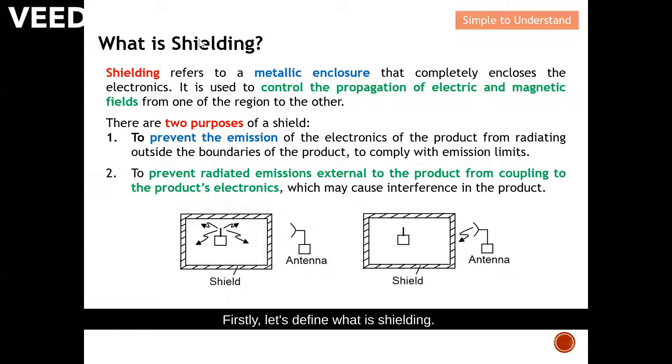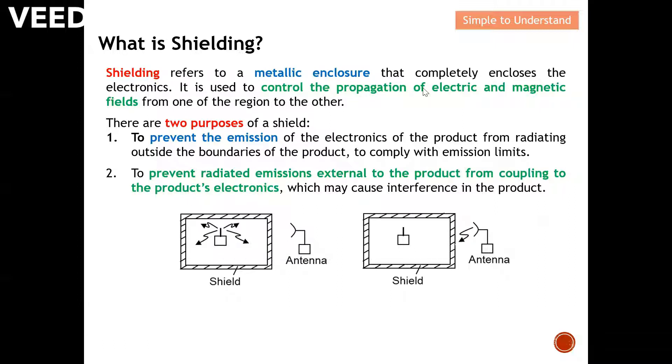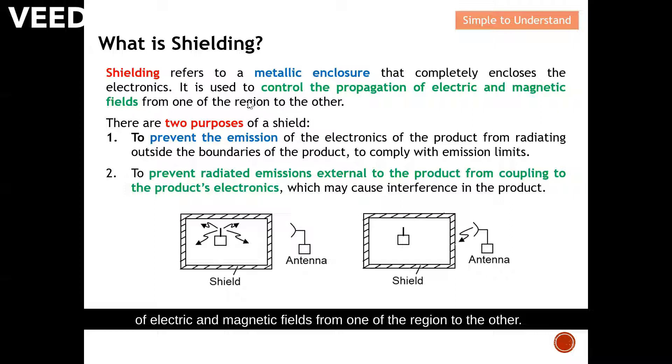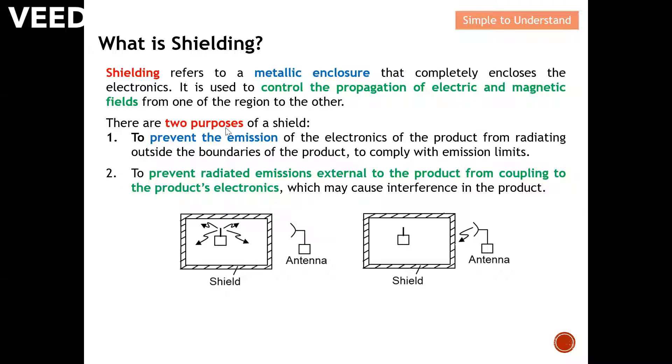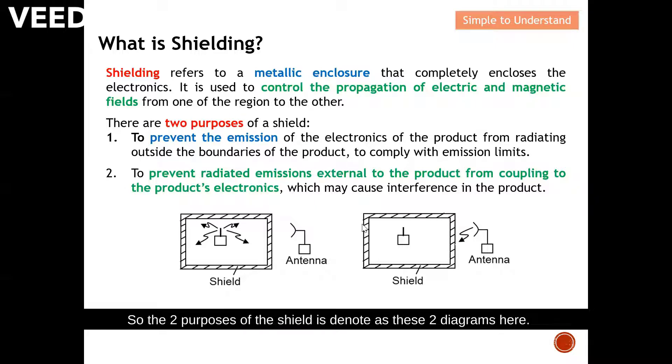First, let's define what is shielding. Shielding refers to a metallic enclosure, which means that the covering must be metallic that completely encloses the electronics. The purpose of shielding is to control the propagation of electric and magnetic fields from one region to another.